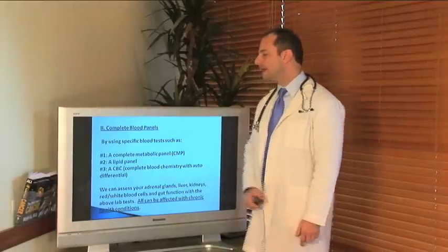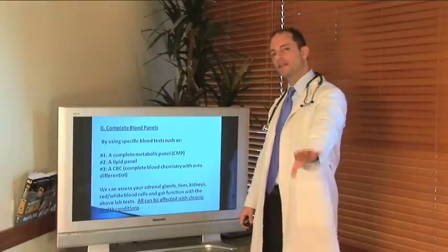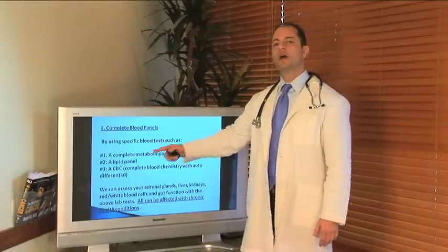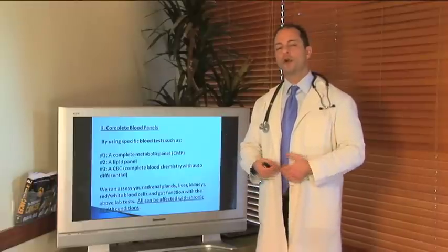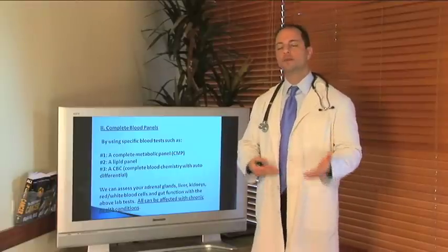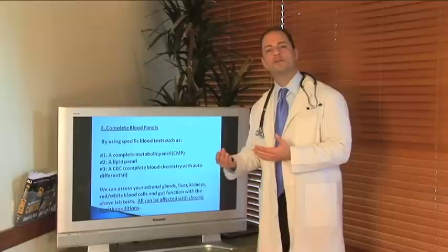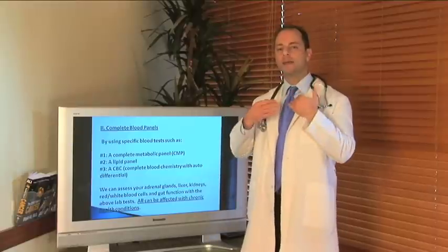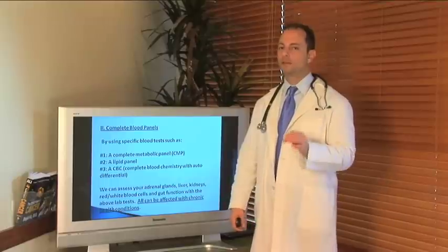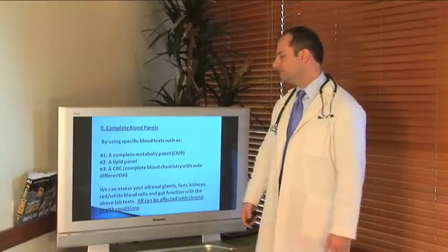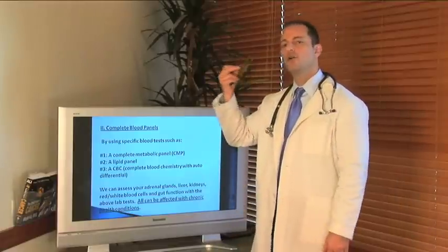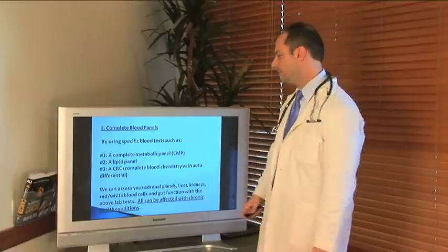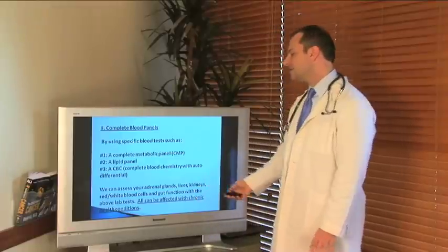We run complete blood panels besides the whole thyroid panel I showed you in the beginning. We're running a complete blood cell count, red blood cells and white blood cells. Are there infections in your system? Are you anemic? If you're anemic, your brain can't get enough of the nutrients it needs to make that thyroid run normally. You've got to look at all the mechanisms that are connected here. We're running a lipid panel. Your nervous system needs proper fat absorption in order to let the brain run the pituitary gland to run the thyroid. We can assess everything.